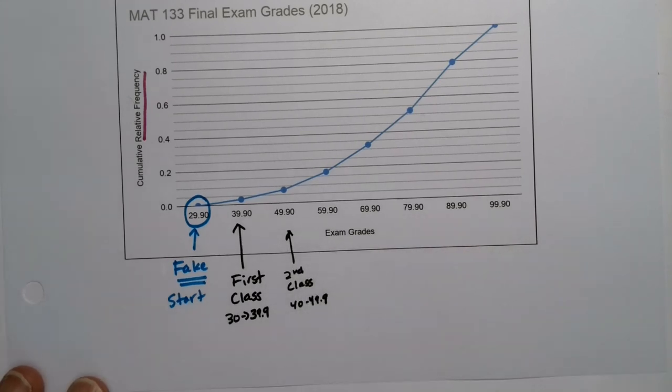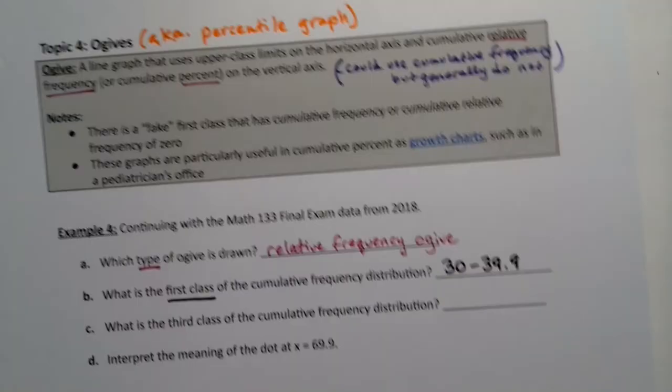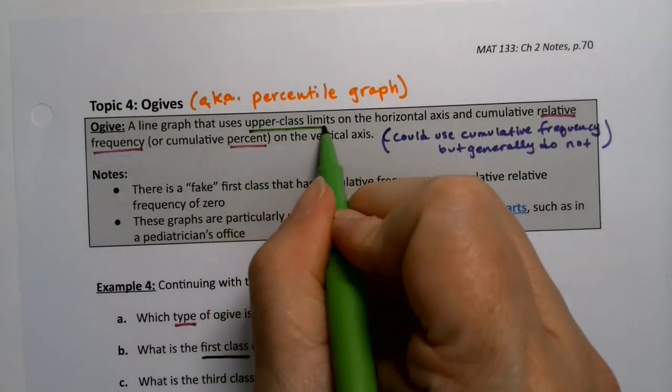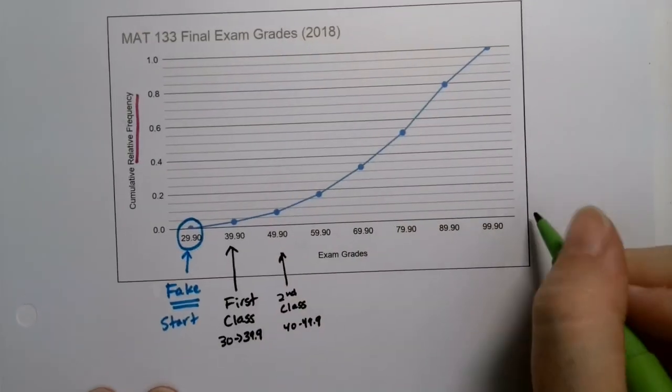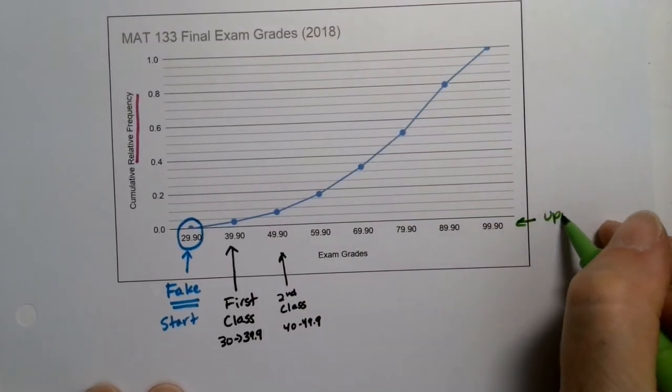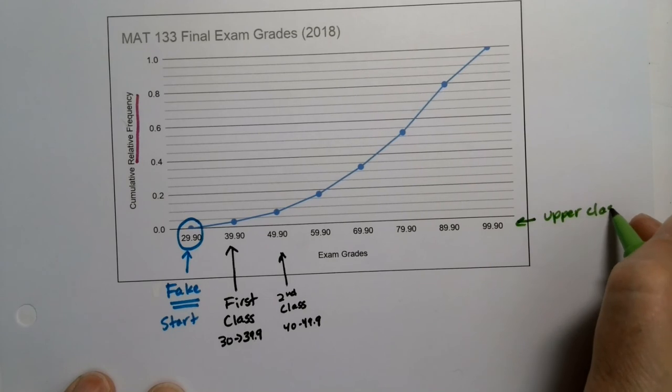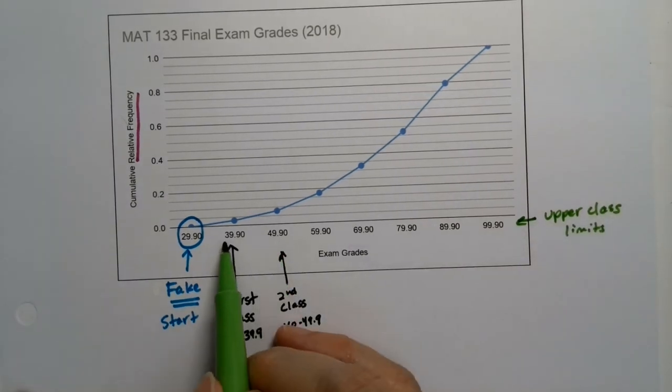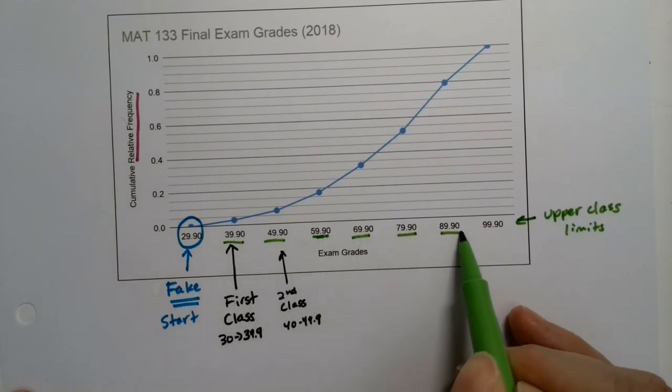Remember that these are the upper class limits down here. So on that horizontal axis, it says it right here, it has the upper class limits on the horizontal axis. So these numbers right here are the upper class limits. They're the last values in those classes. So 39.9, 49.9, and so on. Those are the upper class limits.